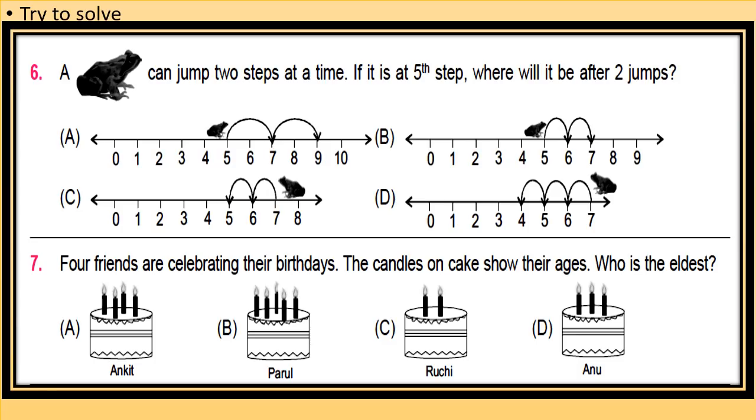A frog can jump two steps at a time. If it is at fifth step, where will it be after two jumps? Look at the options carefully. The frog is at fifth step and can jump two steps at a time. So after two jumps, he will be at ninth step. Option A is correct.